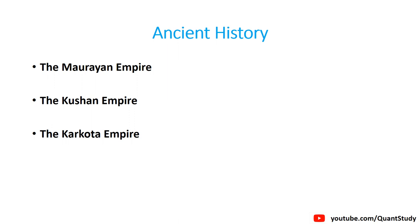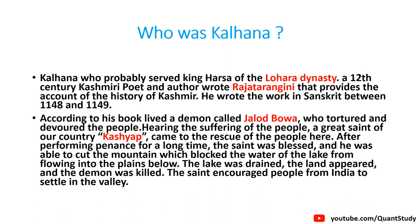His name is Kalhana. Kalhana was a poet in the 12th century — specifically a Kashmir poet — and we will talk about his work. He wrote about Kashmir's history in detail, providing an ancient Hindu account of the region.